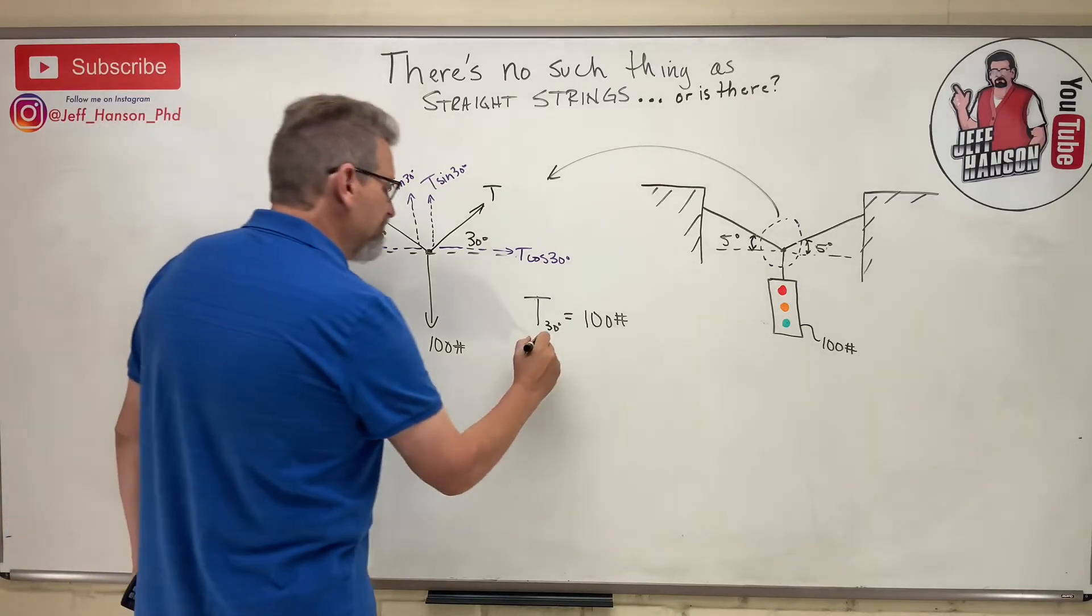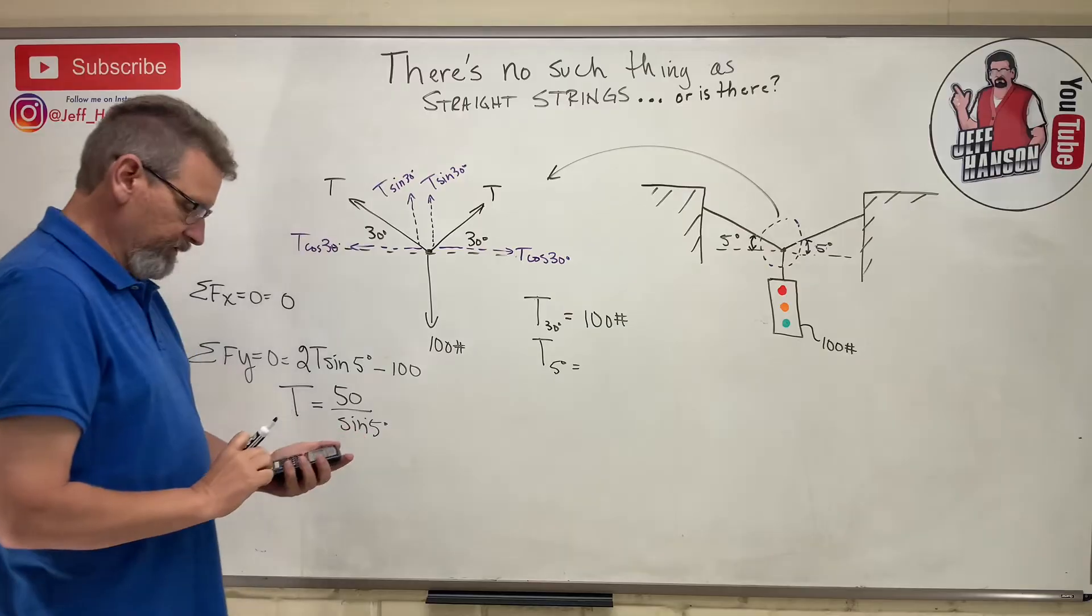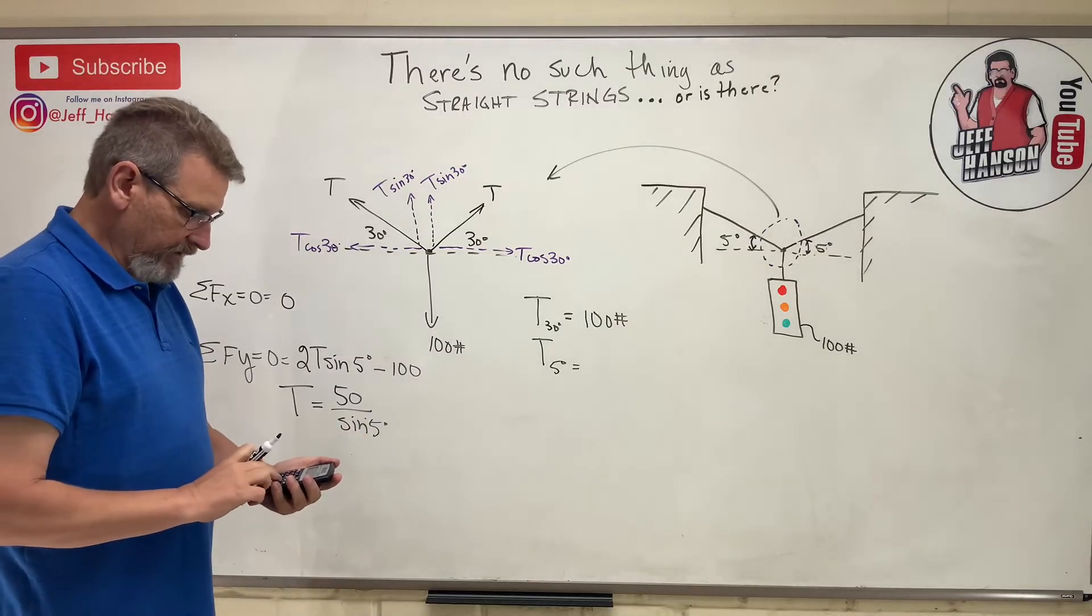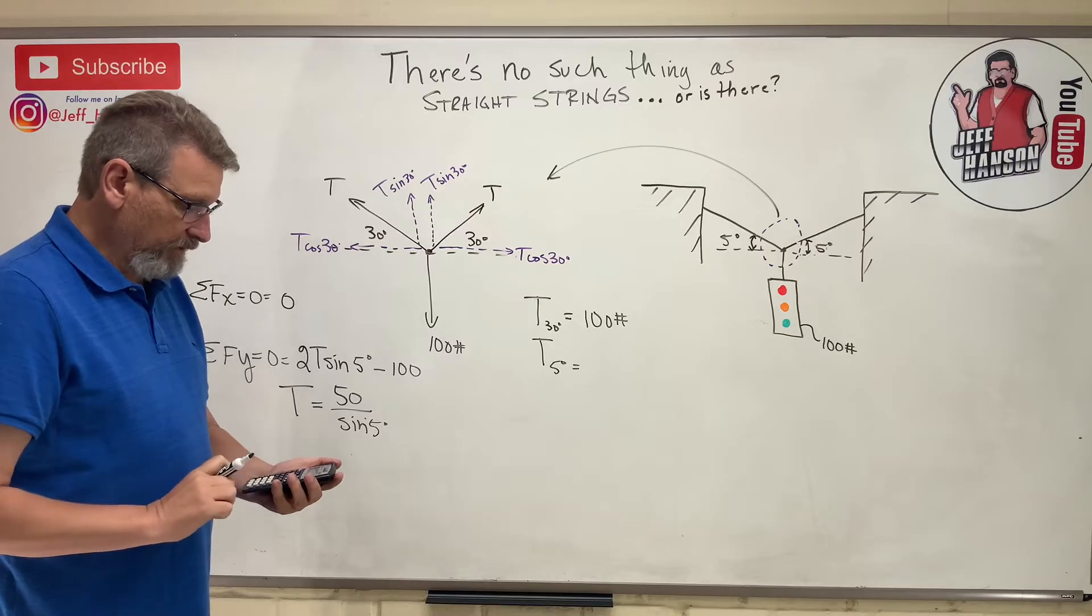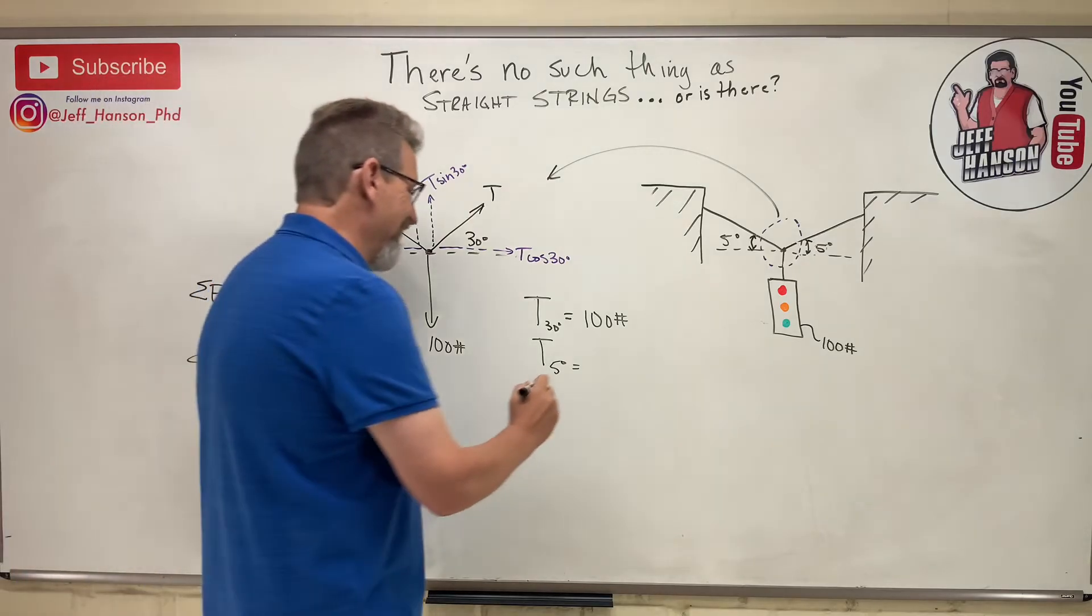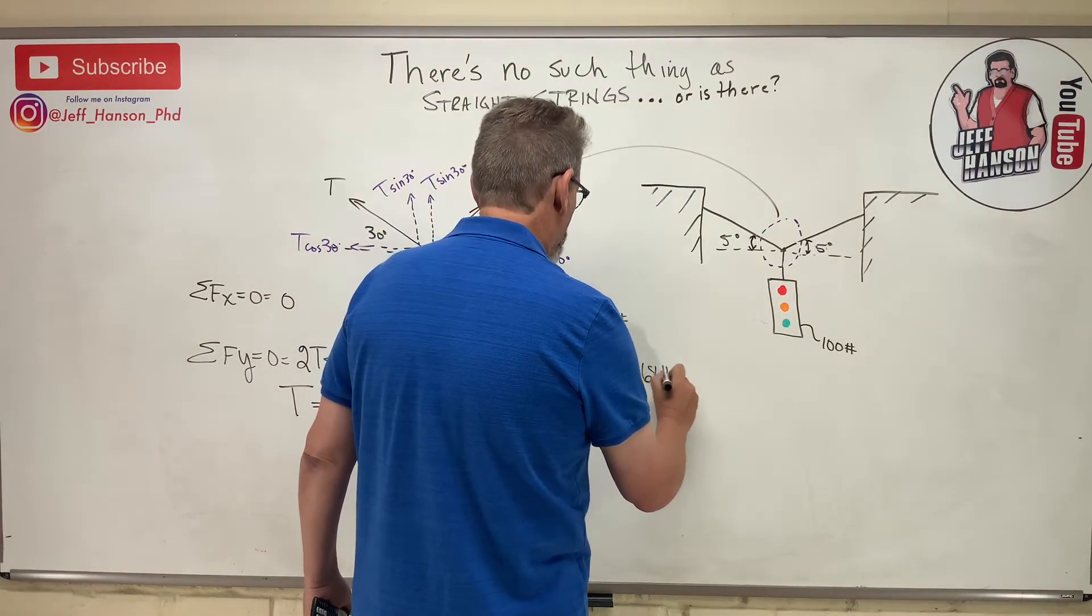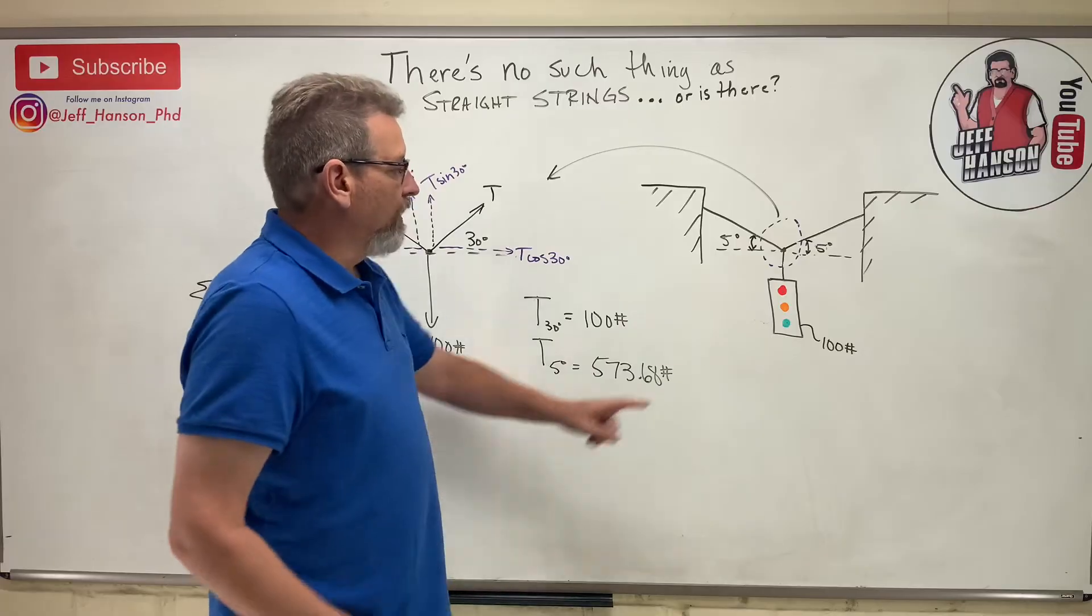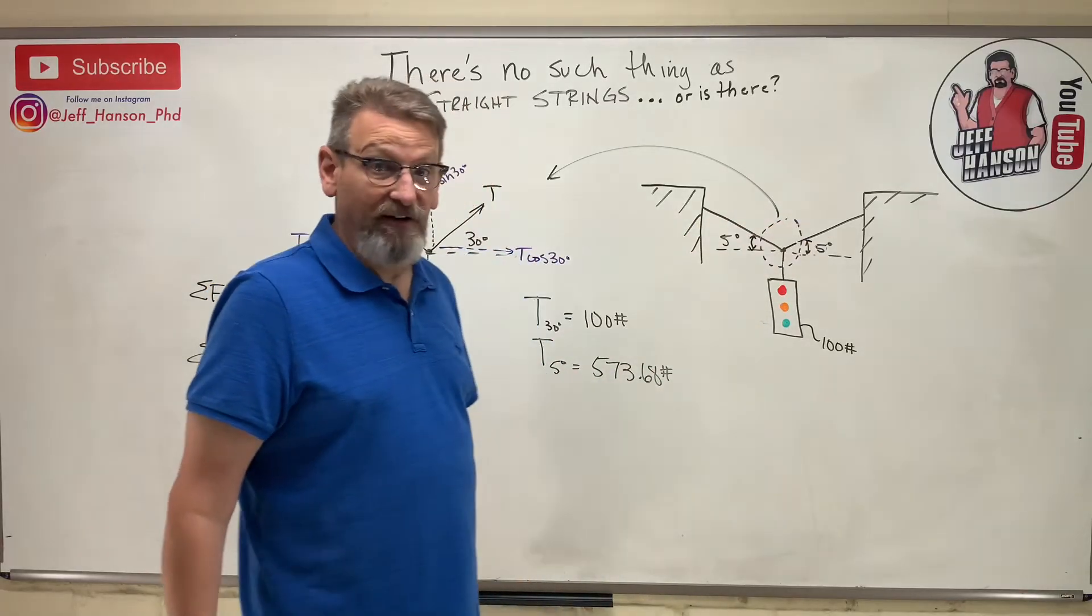The boss wants to know what's the new tension in the cable. It's 50 divided by the sine of five which is 573.68. So to hold up 100 pounds I've got 573 over here, 573 over there. That's a lot.